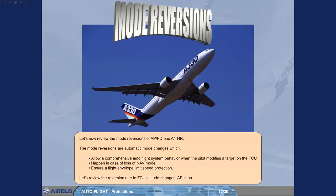Let's now review the mode reversions of autopilot flight director. The mode reversions are automatic mode changes which allow comprehensive autoflight system behavior when the pilot modifies a target on the FCU, happen in case of loss of navigation mode, and ensure a flight envelope limit speed protection.